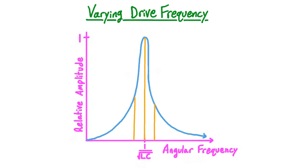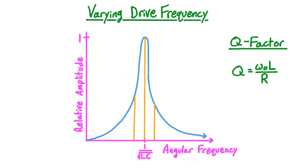For many applications, from measurement equipment to radio communications, it's useful to quantify the sharpness of the resonant peak. The sharper the resonant peak, the more selectively our system responds strongly at a particular frequency. The number we use to quantify sharpness is called the Q, or quality factor, of the resonance. For series circuits, the Q factor equals the angular frequency of the resonance times the inductance divided by the resistance. Larger Q factors correspond to sharper peaks, and smaller Q factors to broader peaks. The width of the peak at about half the maximum value is approximately the resonant frequency divided by the quality factor.